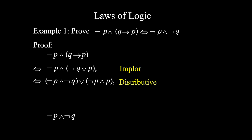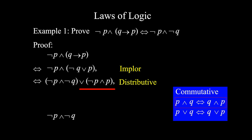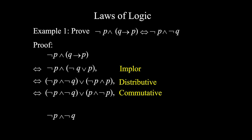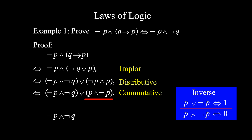Don't forget to put the argument — the reasoning in logic is very important. Now, (¬p ∧ ¬q) is already the same as our destination, but we still have ∨ (¬p ∧ p) to eliminate. We can apply the commutative law, so this is equivalent to (¬p ∧ ¬q) ∨ (p ∧ ¬p). Next, p ∧ ¬p — what is it equivalent to? Yes, it is equivalent to 0 according to the inverse law.